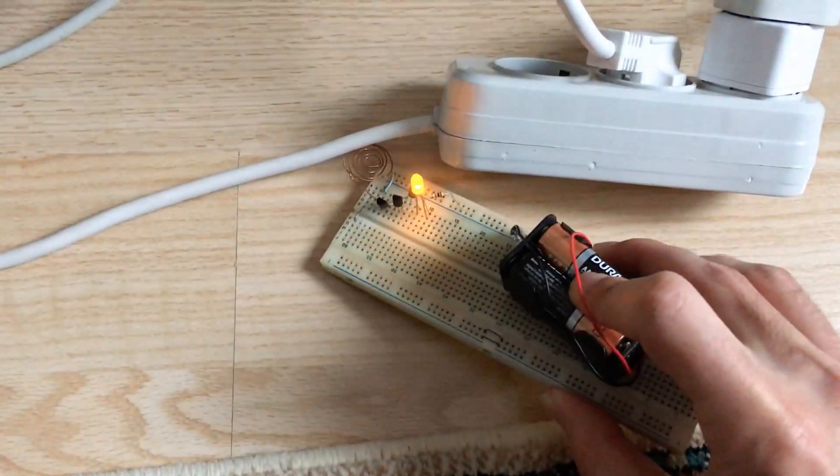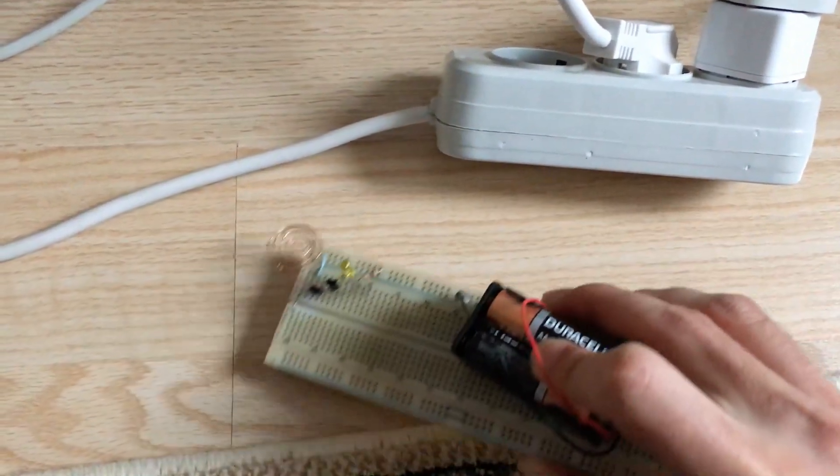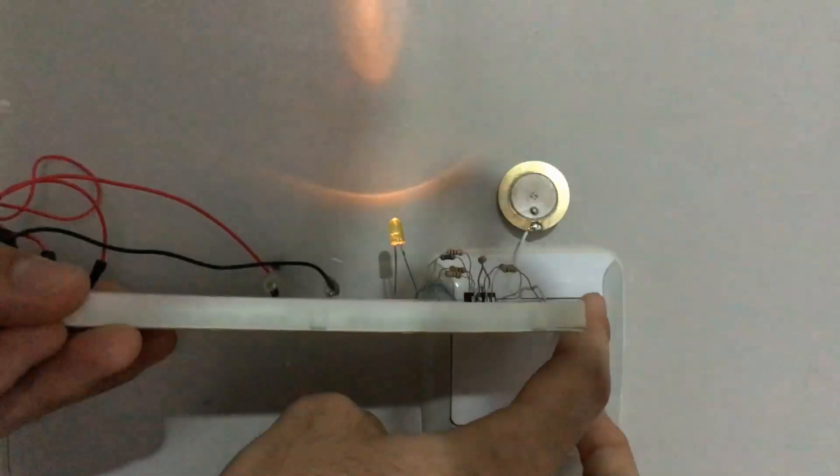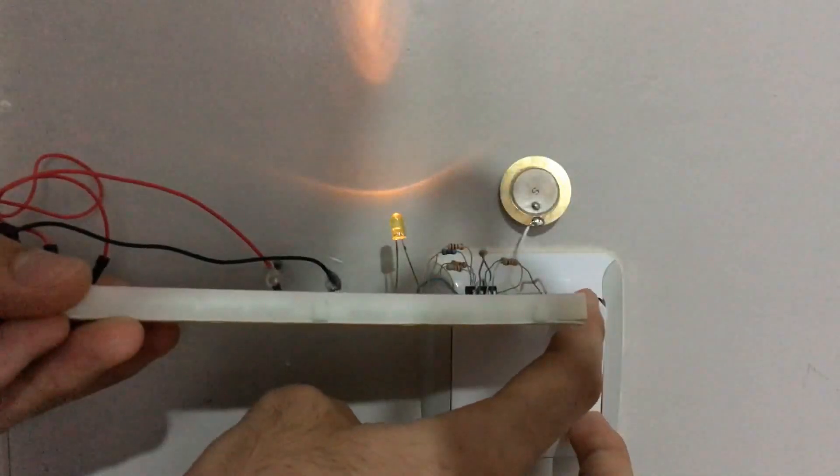When searching on YouTube for voltage detector circuit, you will find many tutorials showing how to build the circuit and demonstrating it. But how and why it works? And is there only one way of building such a circuit?